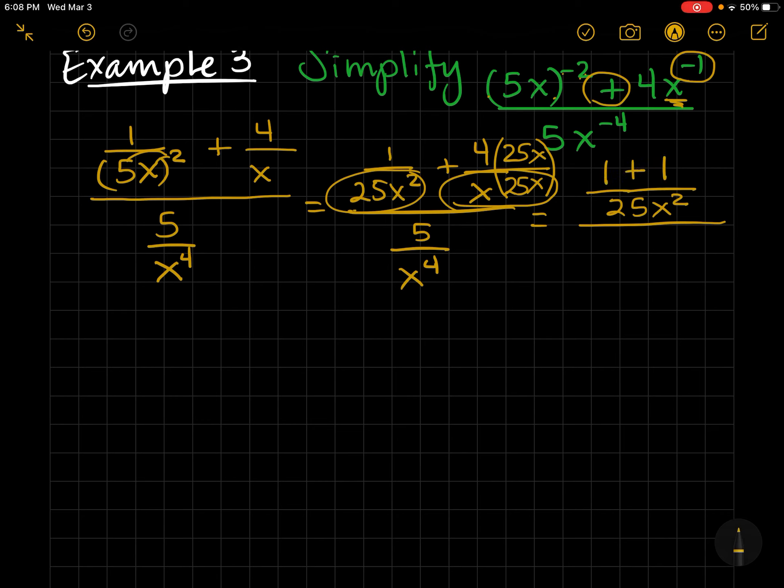So, in the numerator, I have 1 plus 100x. And in the denominator, 5 over x to the 4th power.